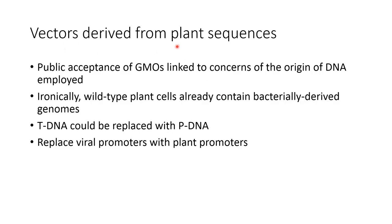More recent advances in the design of att recombination sites have permitted the assembly of up to 5 DNA molecules within a single vector construct, but none have been designed as yet for plant transformation. Vectors derived from plant sequences address public acceptance of genetically modified organisms linked to concerns about the origin of DNA employed. Ironically, wild-type plant cells already contain bacterially derived genome sequences. The T-DNA could be replaced with P-DNA, and viral promoters replaced with plant promoters.